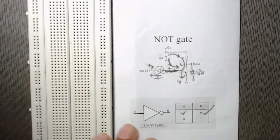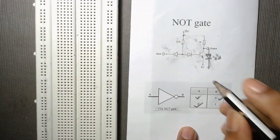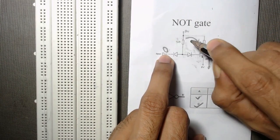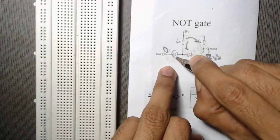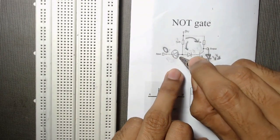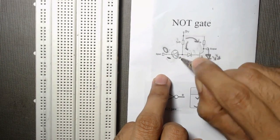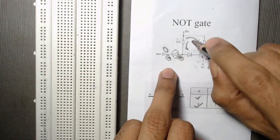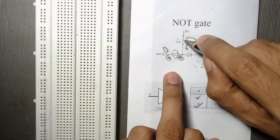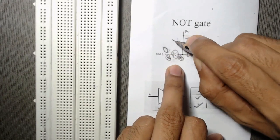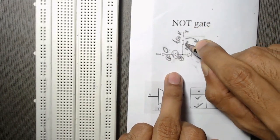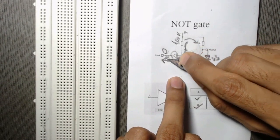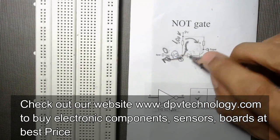Now for the second set of inputs — if A is 0, that means if we apply 0 at the input terminal, then we can see the current will flow through this part and this part also. In this case, this diode will be in forward bias because this side is positive and this side is negative, and this positive side is connected to the positive terminal of the battery. So this diode acts as forward biased, and the current coming through this 100K resistor will flow through this diode.